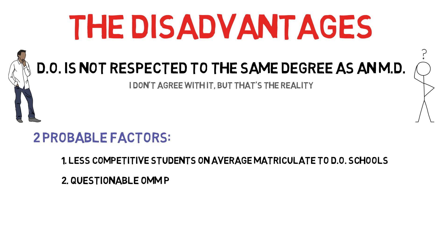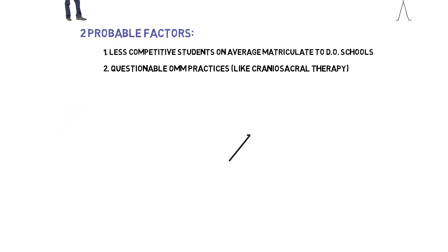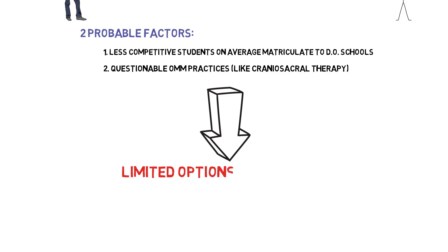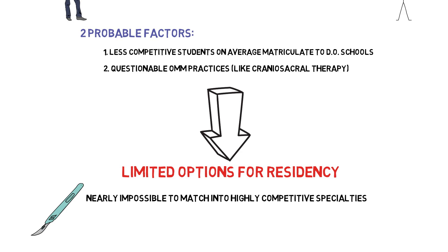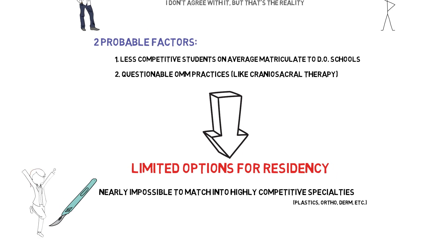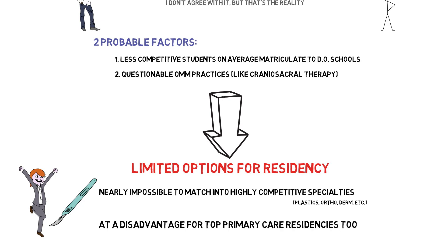The second factor is the questionable or non-existent scientific basis of some practices, such as the craniosacral therapy I talked about earlier, in which you alter the flow of cerebrospinal fluid. What this translates to for you is, if you go to a DO school, your options may be limited when it comes to residency. In some specialties, such as plastic surgery, it is nearly impossible to match if you have a DO. The year I matched into plastic surgery residency, I believe there was only one osteopathic medical student who matched into plastics as well, and this was considered a huge deal. That said, if you are interested in primary care, it will make much less of a difference, unless you're shooting for a top internal medicine program. These top internal medicine programs are also very competitive, and DOs are at a sizable disadvantage.